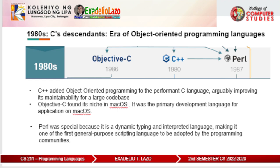The 1980s: C's descendants and the era of object-oriented programming languages. The concept of object-oriented programming was becoming mainstream in the 1980s. However, the most popular programming language, C, was a procedural language. There were many attempts to make C object-oriented, but C++ and Objective-C were the only two that remained.